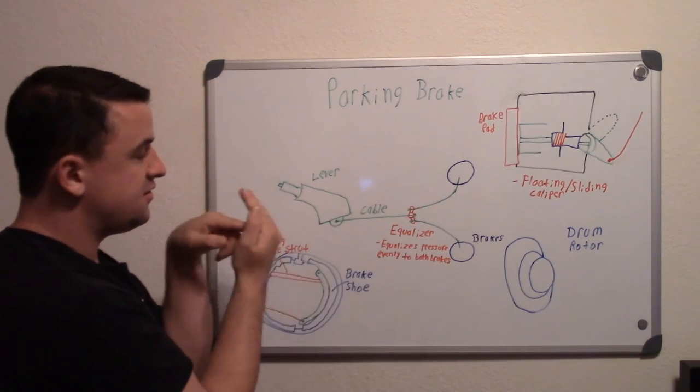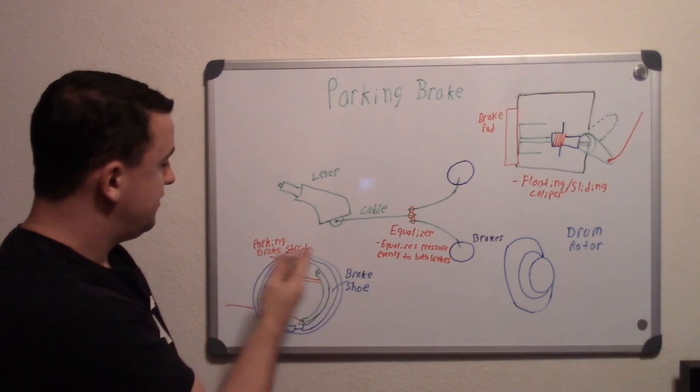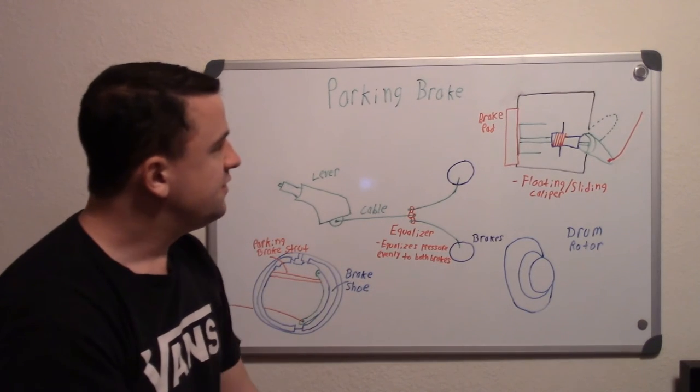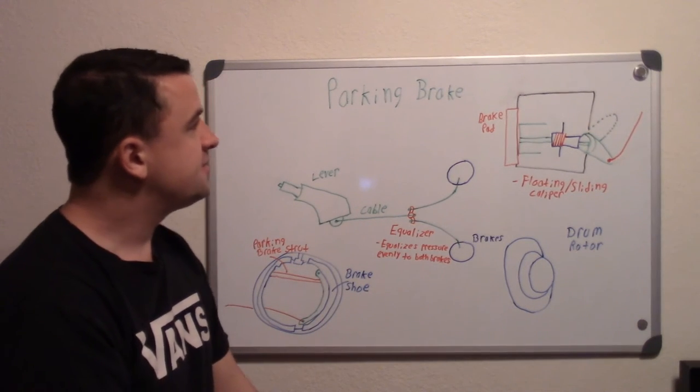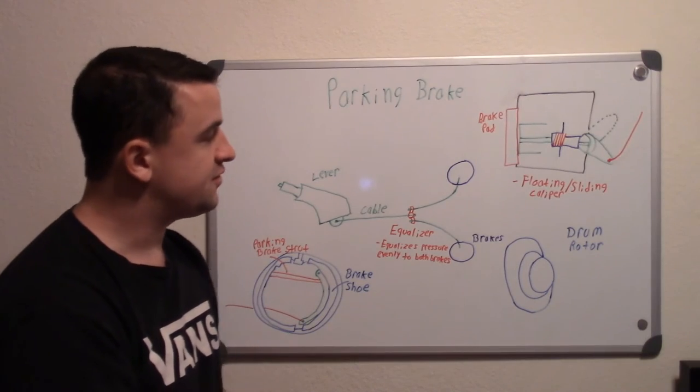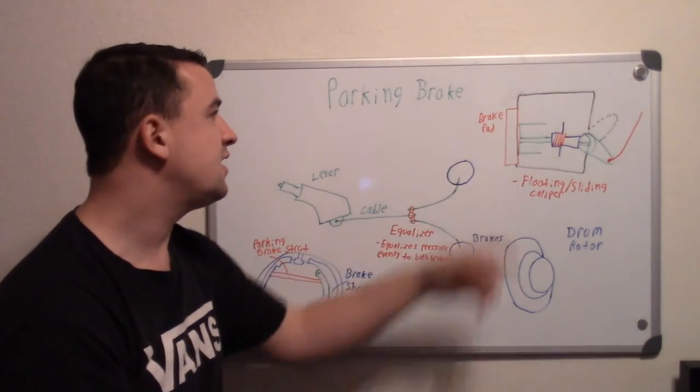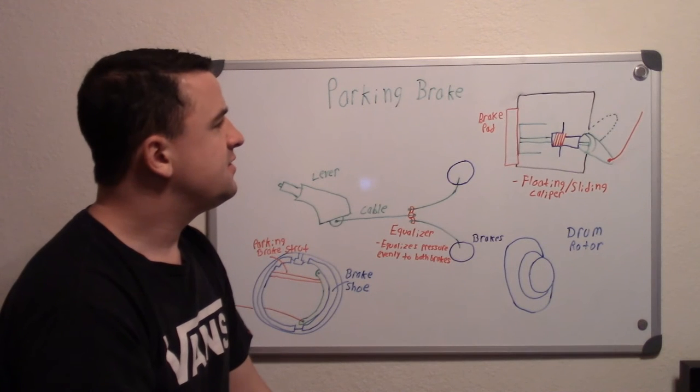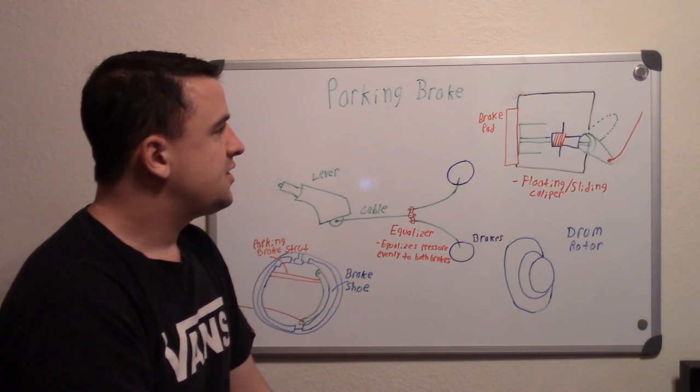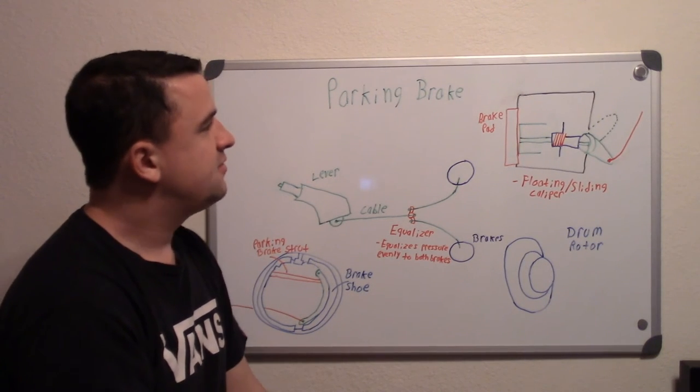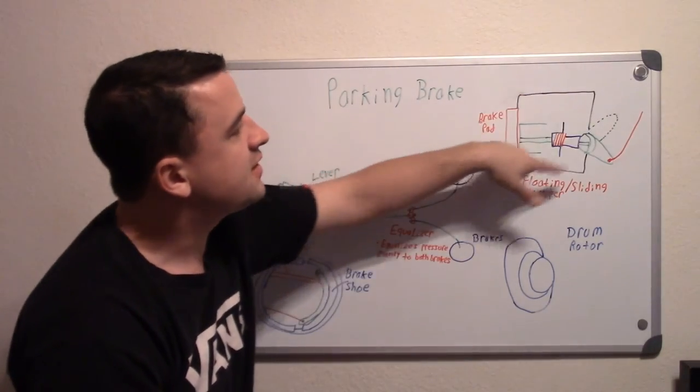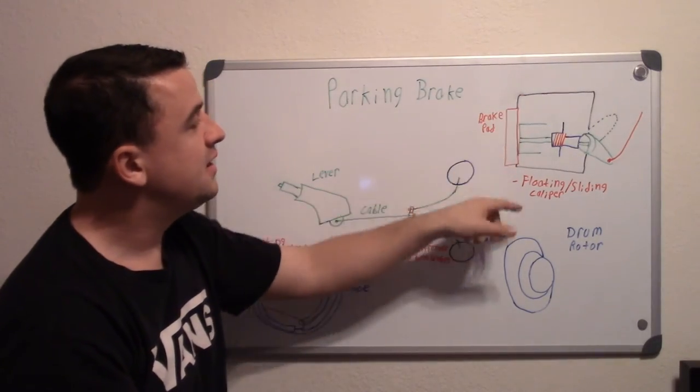On disc brake systems, usually on floating or sliding calipers, you have this kind here. There are different types—different manufacturers use different ways. Basically, here you have your whole caliper, this is your brake pad, and this is your piston.